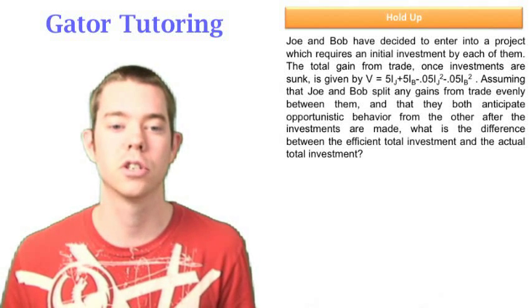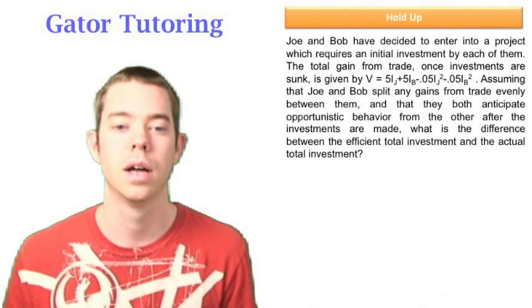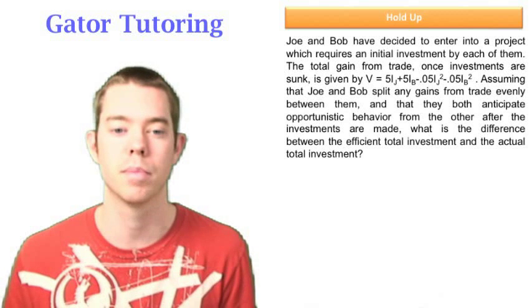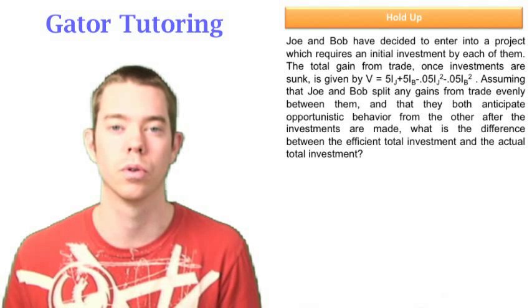It says, assuming that Joe and Bob split any gains from trade evenly between them, and that they both anticipate opportunistic behavior from the other after the investments are made, what is the difference between the efficient total investment and the actual total investment?